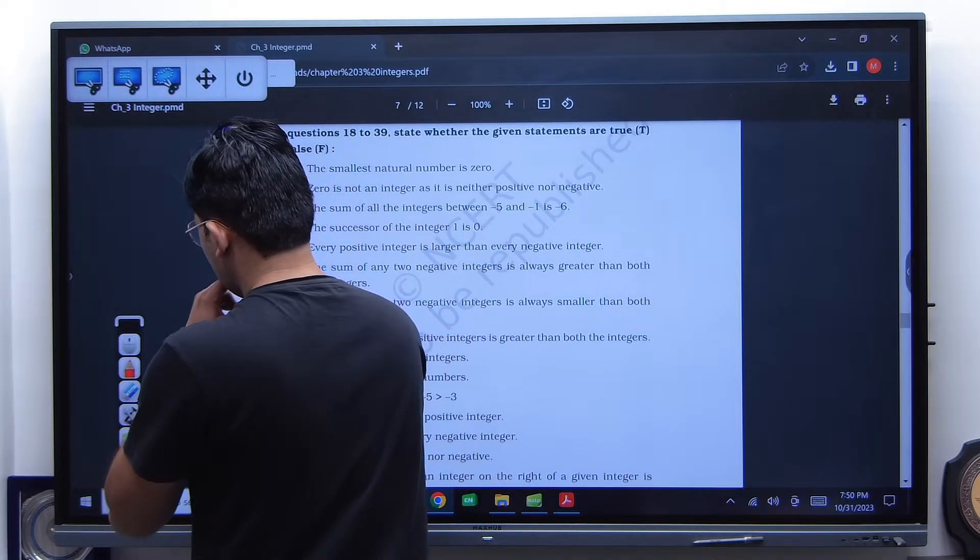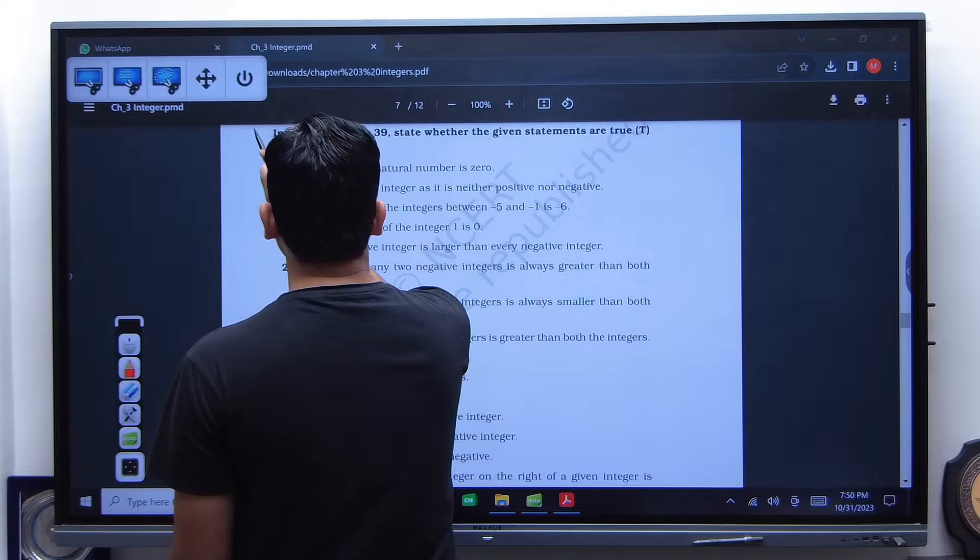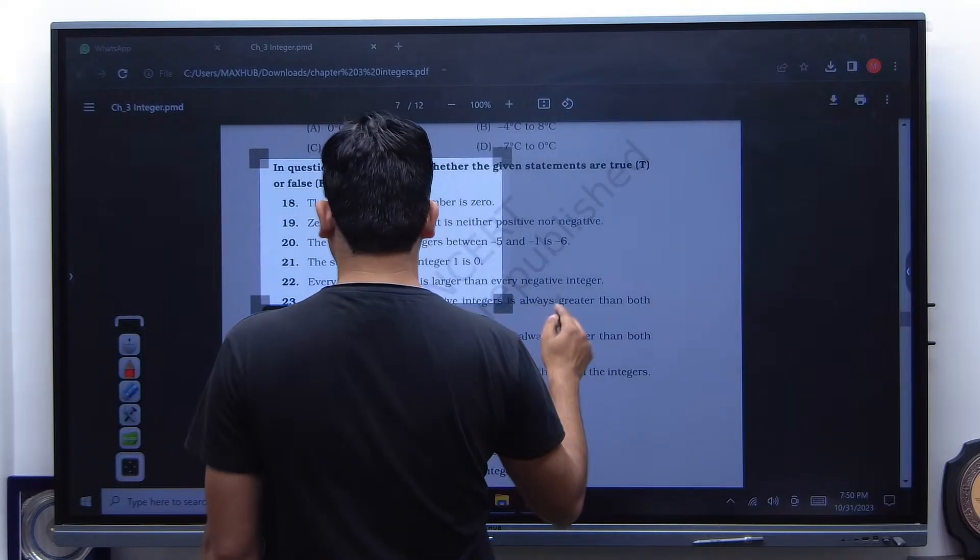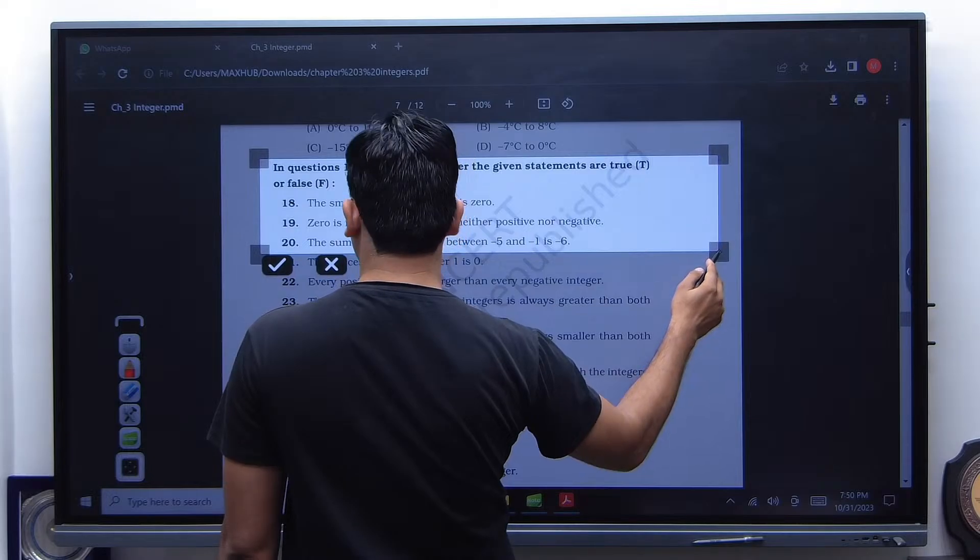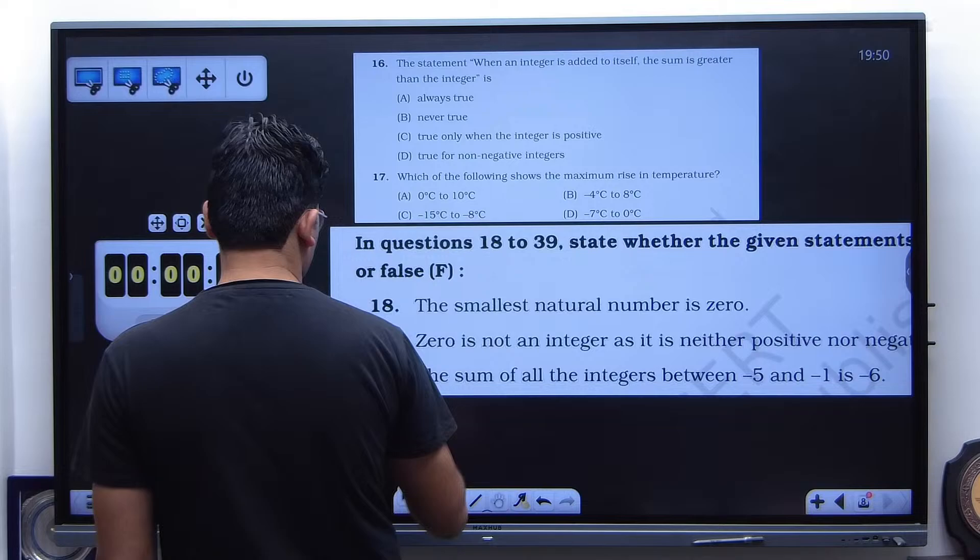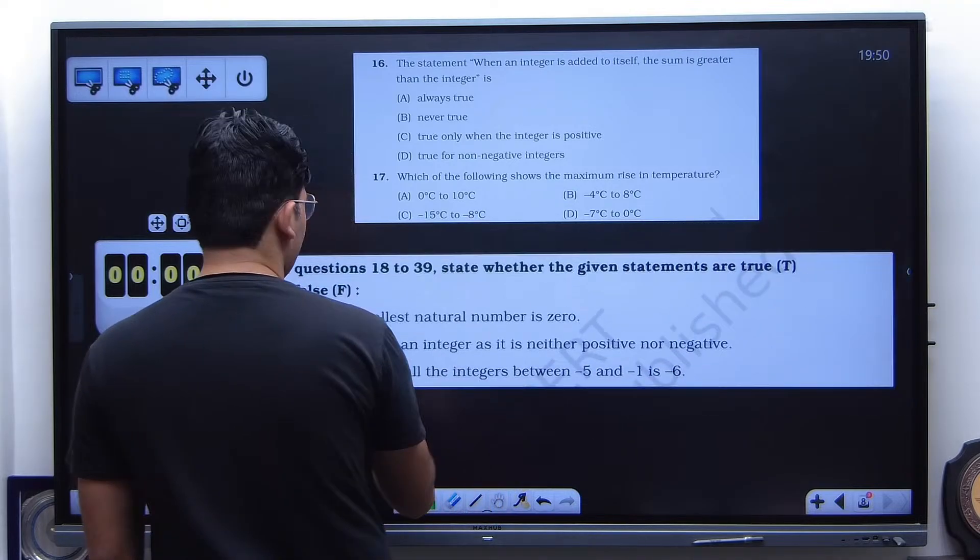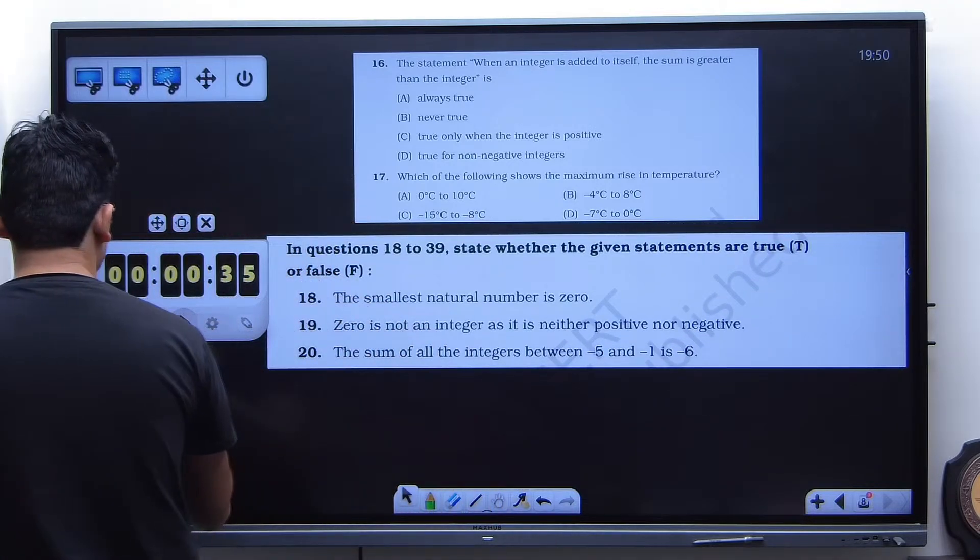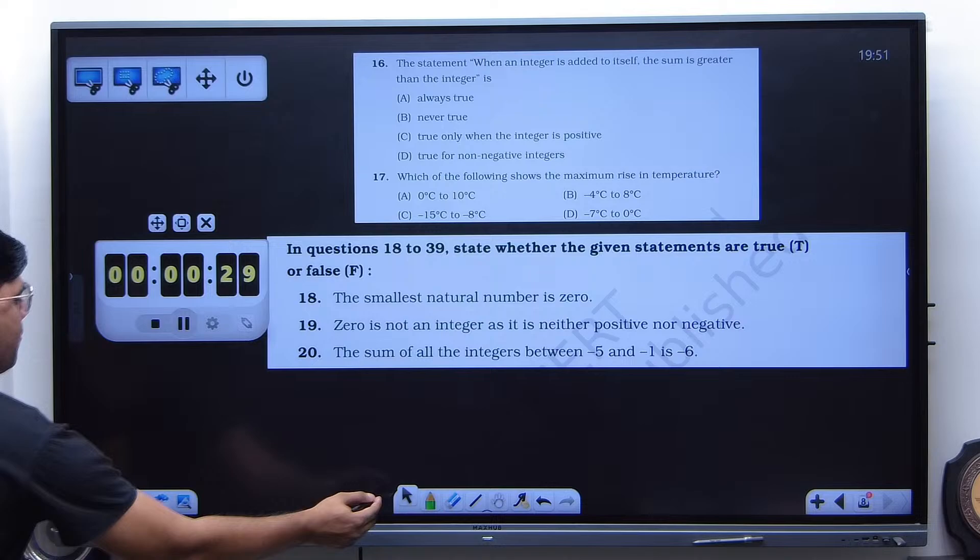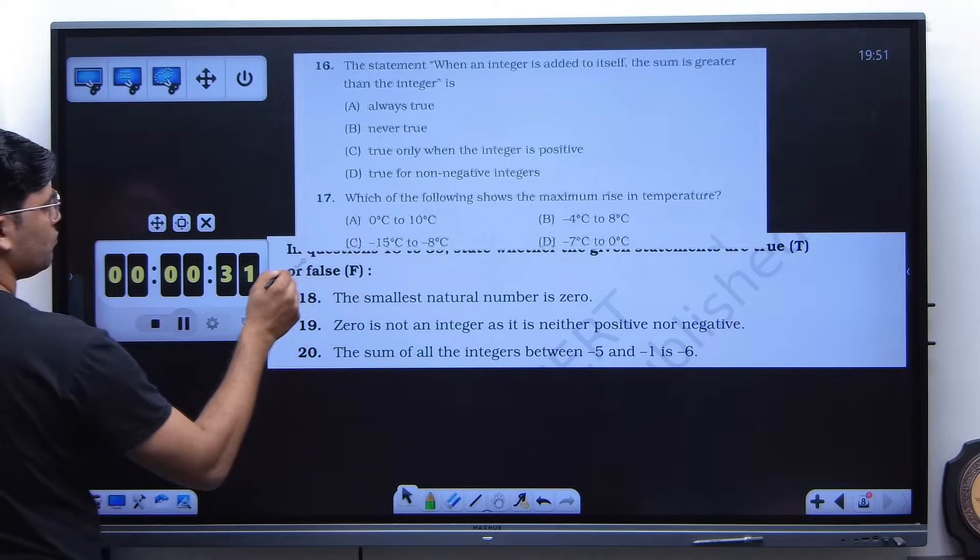We have done 17 questions till now. Three more questions. So now after 17 questions, the question involves true and false. So you have to read, you have to answer it. Start.